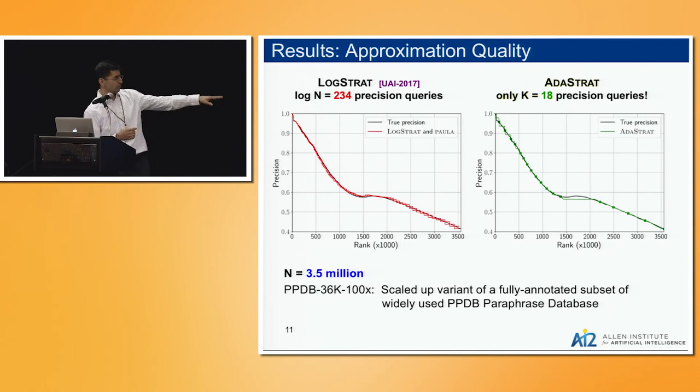There's one point where it's a little flat, and you can see on the right that the monotonicity condition is violated. The true plot goes up, so the algorithm fails at that point. But most importantly, LogStrat used 234 precision queries, whereas AdaStrat needs about an order of magnitude less, only 18 queries.